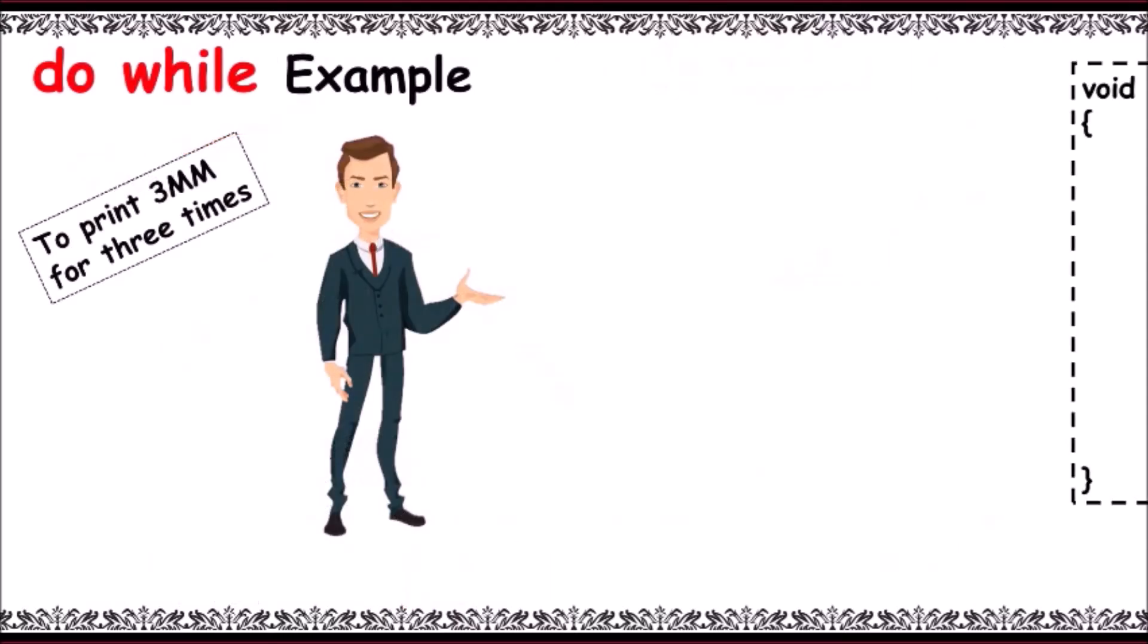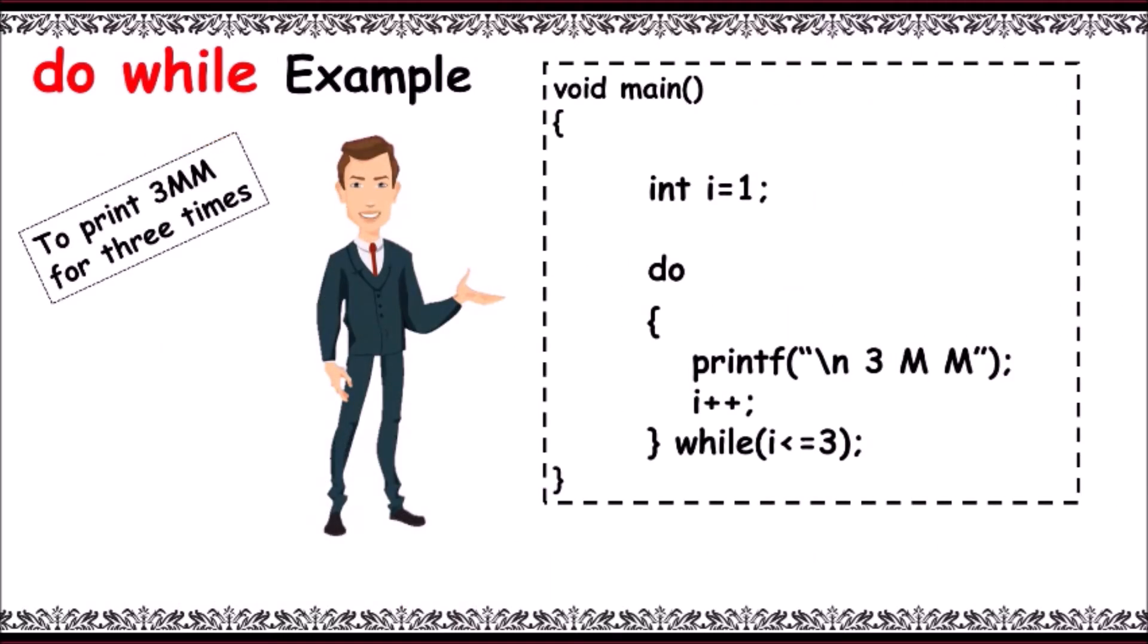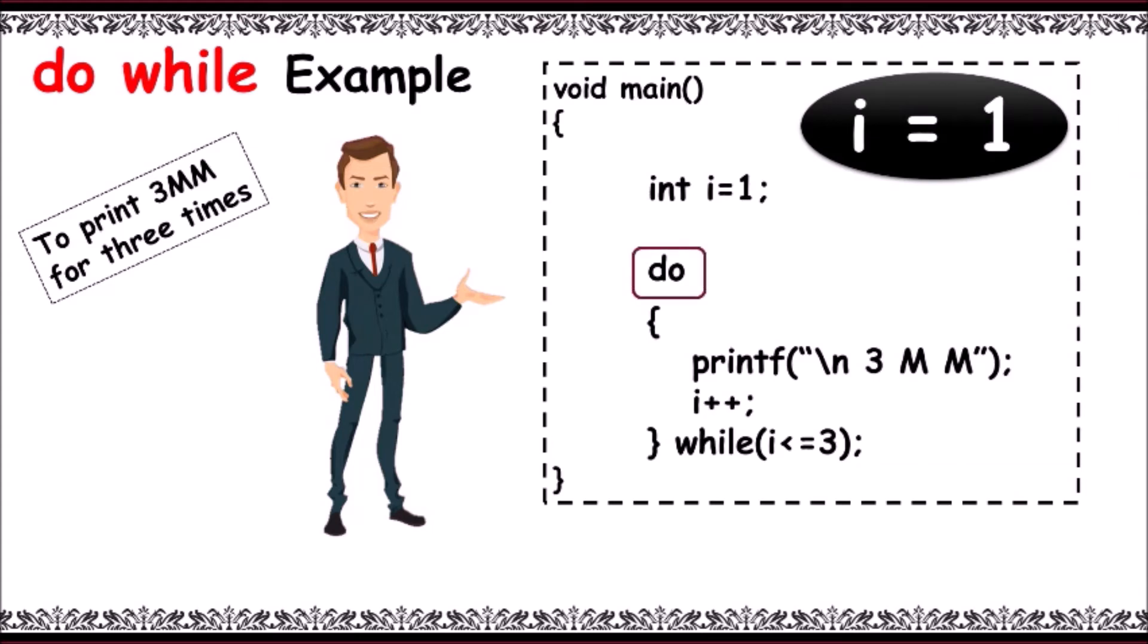Now consider an example to print 3MM for three times. First, i is initialized with one, that is i equals one. Then irrespective of the condition, the control enters into the loop on seeing do keyword. Then prints 3MM for the first time and i value is incremented. Now i equals two.